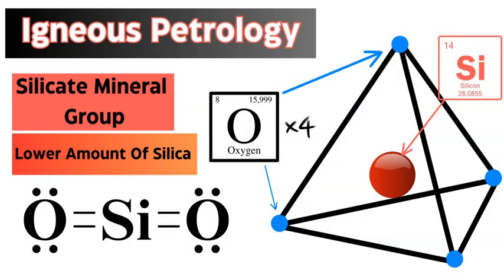Igneous petrology is the study of igneous rocks — how they form, their types and characteristics. Mafic rocks are based on silicate minerals, because the silicate mineral group is the most abundant mineral group on Earth. This is based on the amount of silica, SiO2 or SiO4, in its composition, and the tetrahedron shape has silicon in the middle and four oxygen elements on the outside. Mafic rocks are lower in silica compared to felsic rocks.